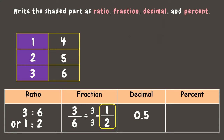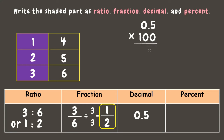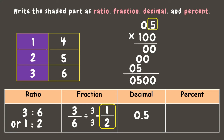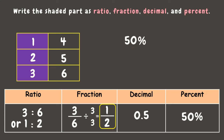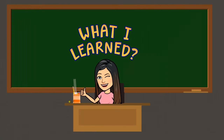Now let's convert 0.5 into percent by multiplying by 100. Since there is one decimal place, move the decimal point one place, giving us 5.0 — add the percent sign for 50 percent. Using the shorter way, move the decimal point two places to the right in 0.5, and our answer is still 50 percent. Great job!